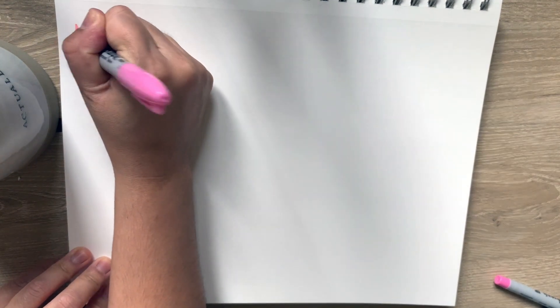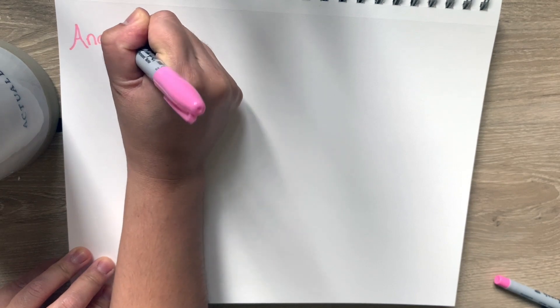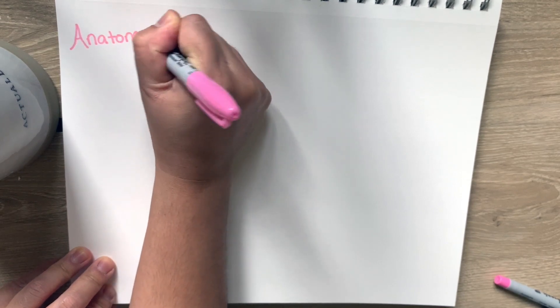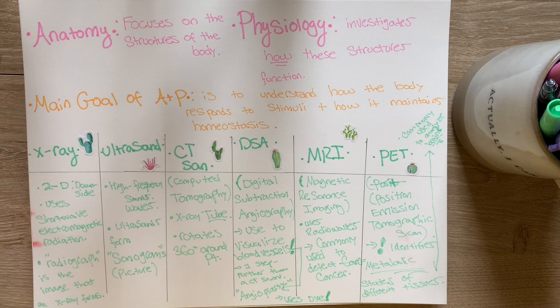Let's talk about the differences between anatomy and physiology. Anatomy answers the questions what and where, while physiology answers the questions how and why. For example, if we're talking about the muscles, anatomy tells you where they're located and what they're attached to, while physiology tells you how they contract and produce movement. Physiology uses biology, physics, and chemistry to answer these questions. Together, the goal of anatomy and physiology is to understand how the body responds to stimuli and maintains homeostasis.